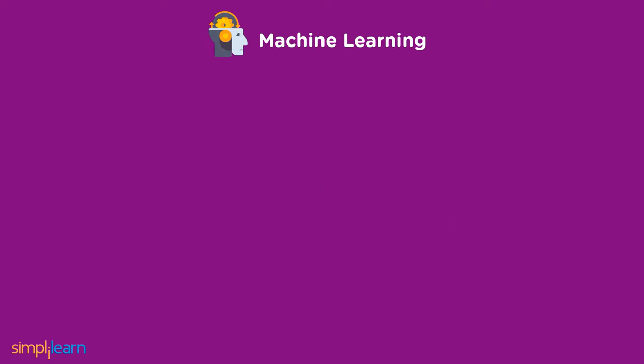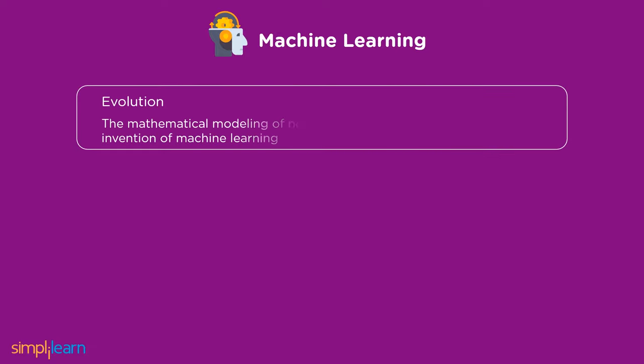The evolution of machine learning started with the mathematical modeling of neural networks, which served as the basis for the invention of machine learning. In 1943, neuroscientist Warren McCulloch and logician Walter Pitts attempted to quantitatively map out how humans make decisions and carry out thinking processes. Therefore, the term machine learning is not new.